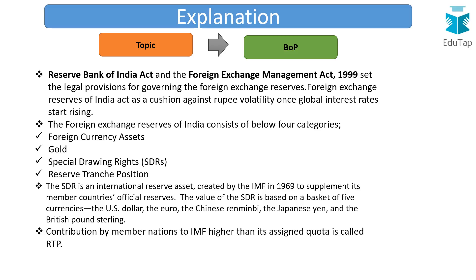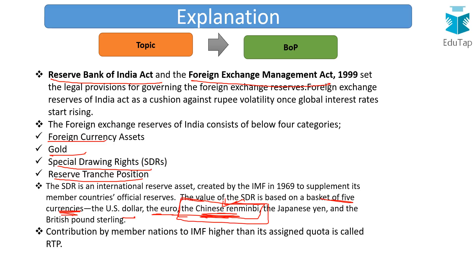The legal provisions governing foreign exchange reserves in India come under the RBI Act and FEMA — the Foreign Exchange Management Act, 1999. The components are foreign currency assets, gold, Special Drawing Rights (SDRs), and RTPs. SDR is an international reserve asset created by the IMF in 1969 to supplement official reserves of member countries. The value of the SDR is based on a basket of five currencies: the US dollar, the euro, the Chinese renminbi — which was the latest currency added to the basket — the Japanese yen, and the British pound sterling.